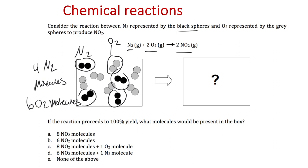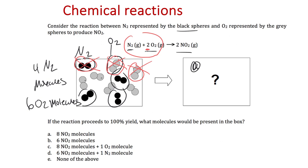The reaction says for every N₂ I need 2 O₂s. So I'll lasso out one N₂ and two O₂s — those three molecules are consumed — and in their place I form 2 NO₂ molecules. Then I do this again: take another N₂ and two O₂s, and form two more NO₂ molecules. The original molecules are gone and the products form in their place.